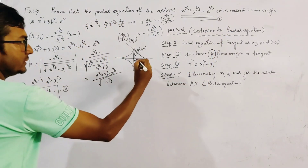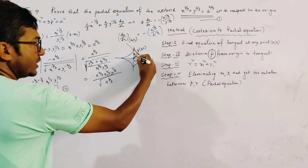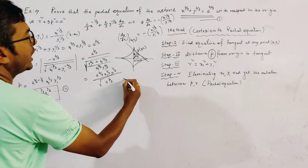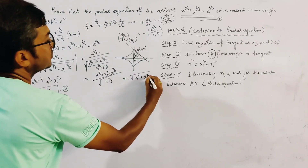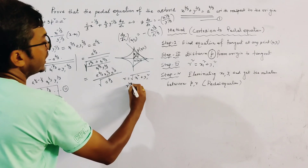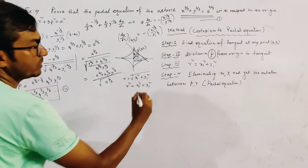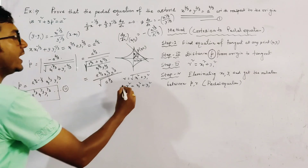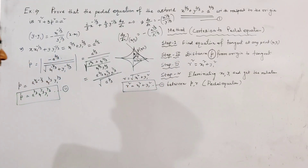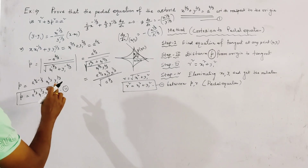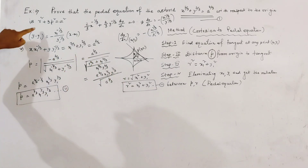The distance from the origin to the point (x1, y1) is r, where r² = x1² + y1². This is relation number 3.